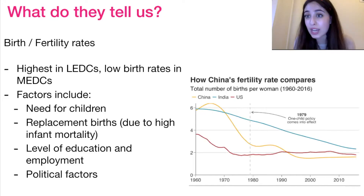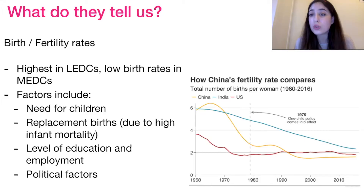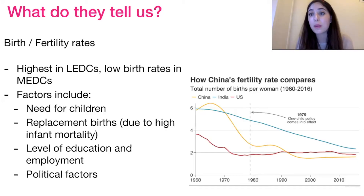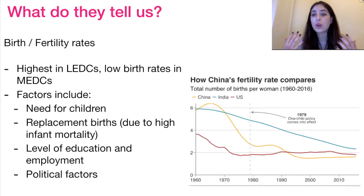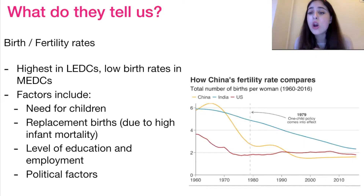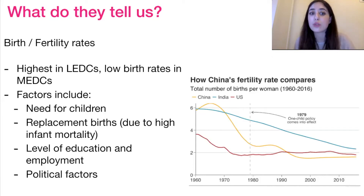Level of education and employment is another factor. Empowering women and giving them opportunity to be educated and to get jobs means fewer babies will be born — we see this a lot in MEDCs. And there are political factors too. Countries are able to encourage or discourage births — for example, China's one child policy, or Singapore's past policies to increase birth rate — all according to their goals at that time.